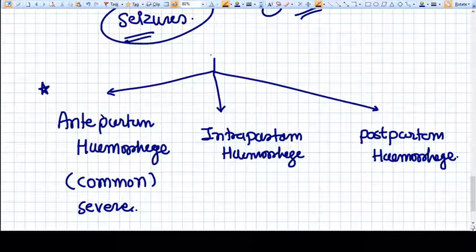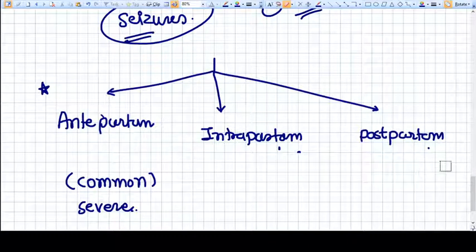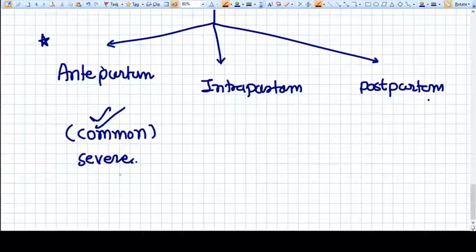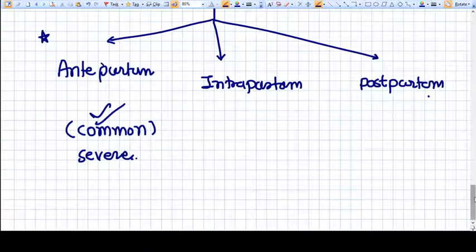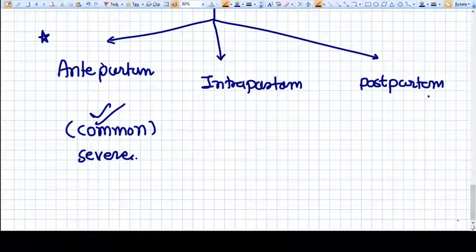Eclampsia can be of three types: antepartum eclampsia, intrapartum eclampsia, and postpartum eclampsia. Antepartum eclampsia is a common and severe form. How to manage the eclampsia, we will do it in the management video.